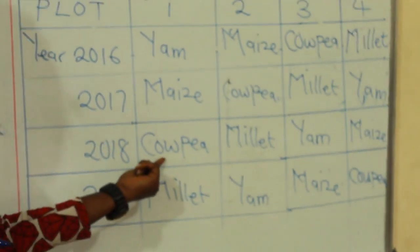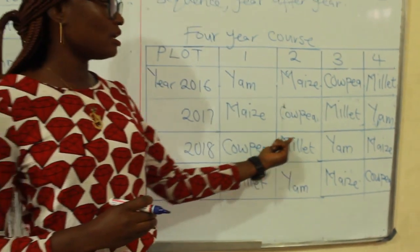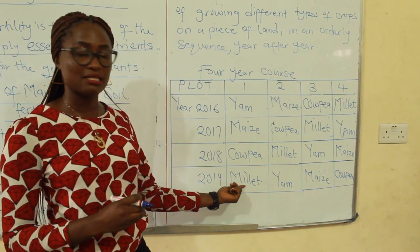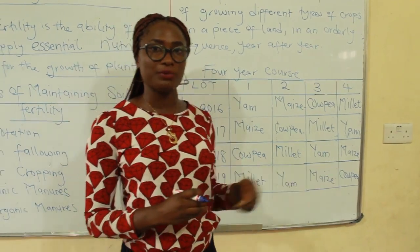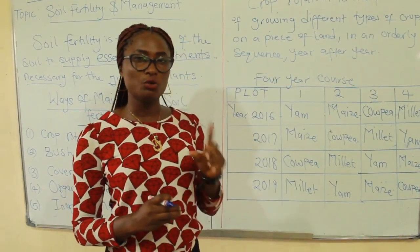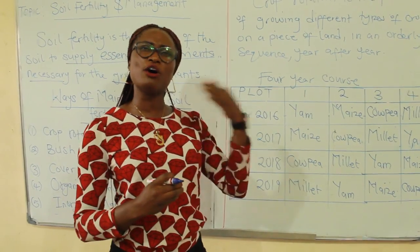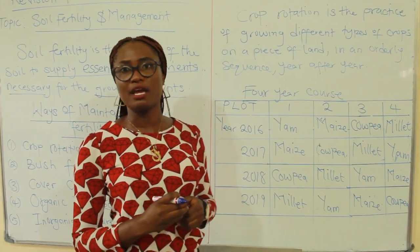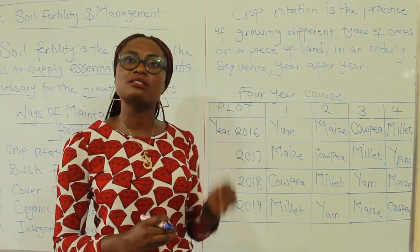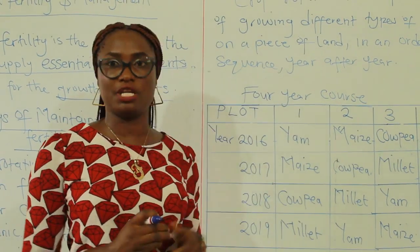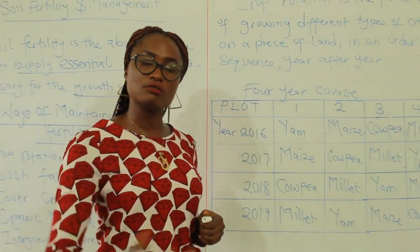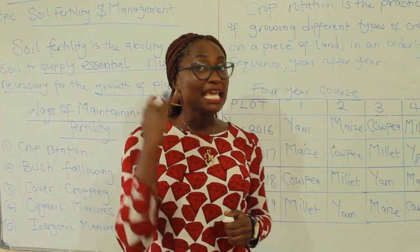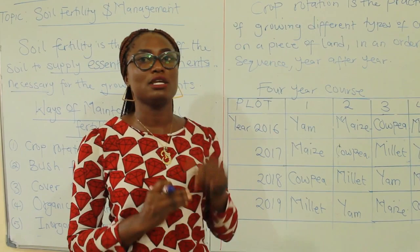In 2019 he plants cowpea, millet, yam, and maize, and then he comes back to plant millet, yam, maize, and cowpea. If you look at this very well, you would observe that before the farmer comes back to plant yam on that same piece of land, it will take him about five years. That is crop rotation — rotating crops, planting different types of crops on a piece of land in an orderly sequence, year after year.